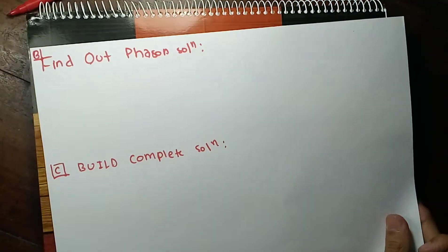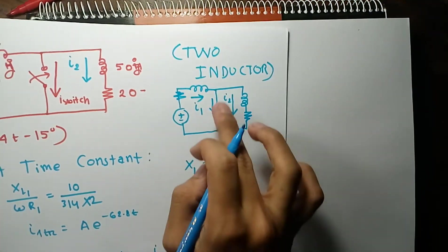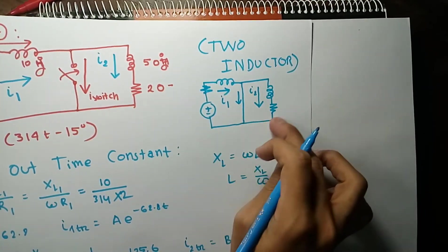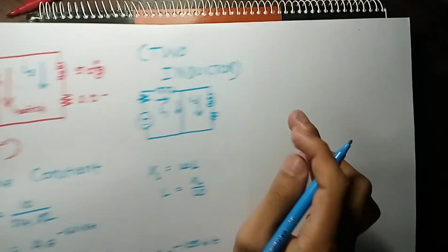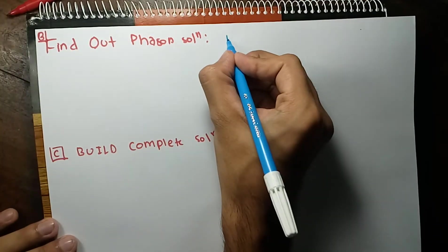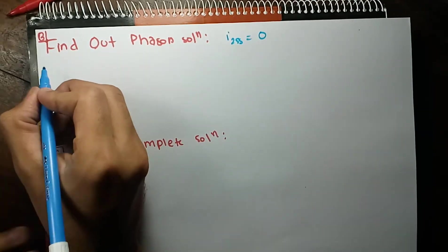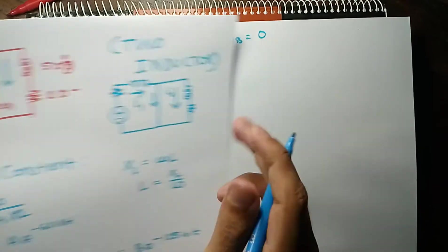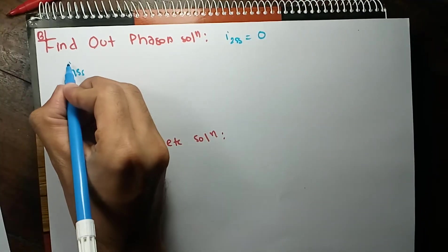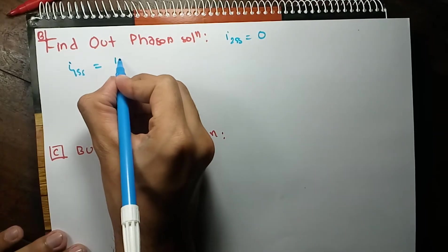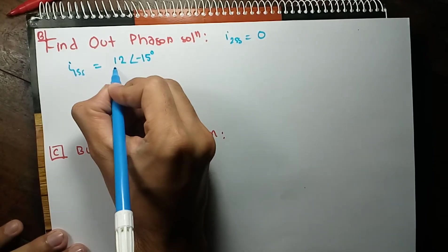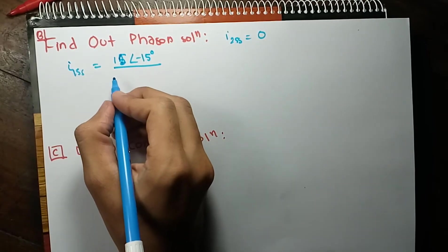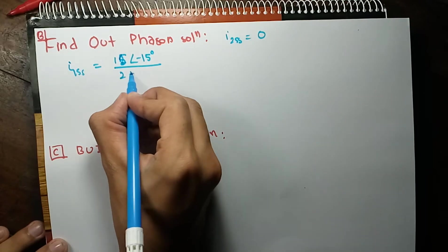Now you have to find out the phasor solution. After switching, the circuit looks like this. There is nothing to energize this branch, so the current through this branch in steady state will be 0. I2 steady state will be 0. However, I1 steady state will have some value — it will simply be the voltage over the impedance. I1 steady state will be 15∠−50° divided by (2 + j10).